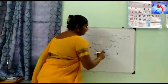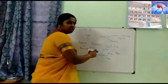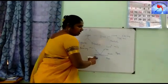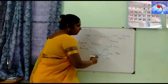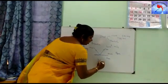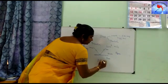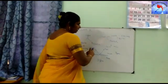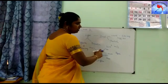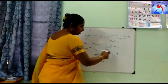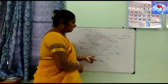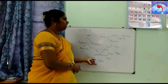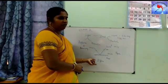The reflection takes place only in the smooth surface, and that is called regular reflection. If the reflection takes place in the rough surface, it is called diffuse reflection or irregular reflection.